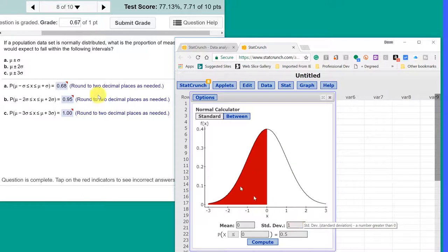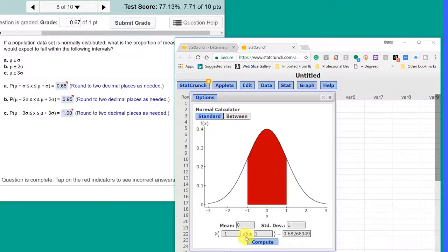And we want to know plus or minus sigma. That's one standard deviation. So we can click on the Between tab here, and it comes up default, minus 1 plus 1, which is what we want, and that is 0.68.